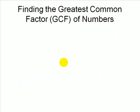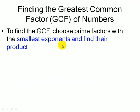Once again, to find the greatest common factor of numbers, we find the smallest exponents associated with the prime factors and then find their product.